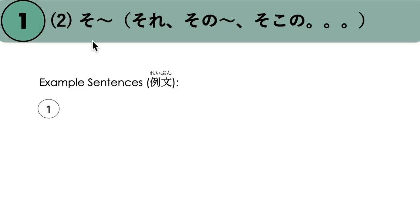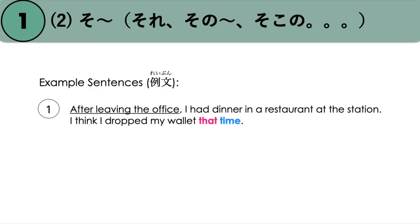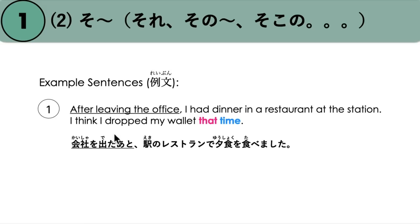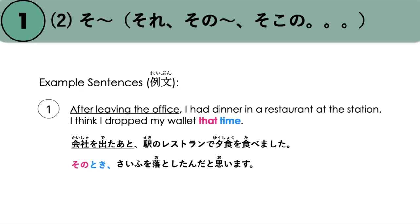Next is when it is in written form. In written form, we only use the prefix So. For example: 'After leaving the office, I had dinner in a restaurant at the station. I think I dropped my wallet at that time.' So 'that time' refers to the time after leaving the office. Kaisha wo deta ato, eki no resutoran de yuushoku wo tabemashita. Sono toki, saifu wo otoshita n da to omoimasu.